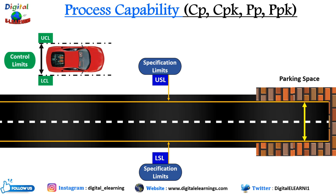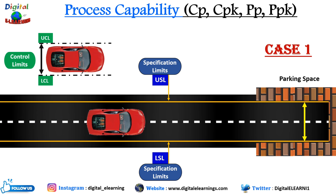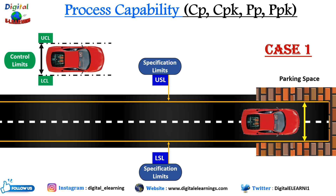In the first case, when the car's dimensions — upper and lower control limits — are small, the car can be easily parked inside the parking space. This means your specification limits are larger than your control limits. Another scenario in the same situation could be that the car is off-centered — even though it is small, it is shifted to one side of the walls, which is equivalent to producing a defective part.